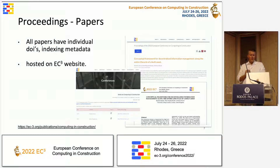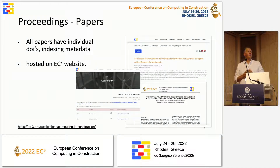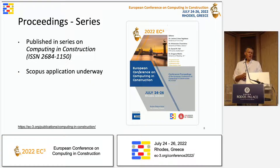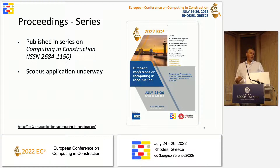Regarding the proceedings — your paper is now part of our conference proceedings. Many thanks to Lavinia for the hard work in getting this ready. You can find the PDF and the abstract of the paper online, and all the individual metadata is hosted on the EC3 website. You have an individual DOI for your paper, and when the video proceedings are done they will also be added to the conference website. We also published the proceedings as part of our series in Computing and Construction — this will be our third set. We have finalized our application for Scopus indexing and are now under evaluation. We are hopeful that the first three conference proceedings will be indexed by Scopus shortly, which we know is important for many of you and your universities.